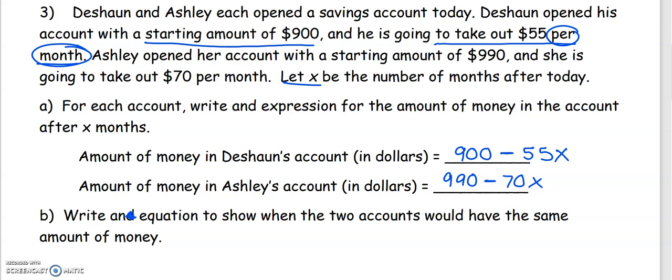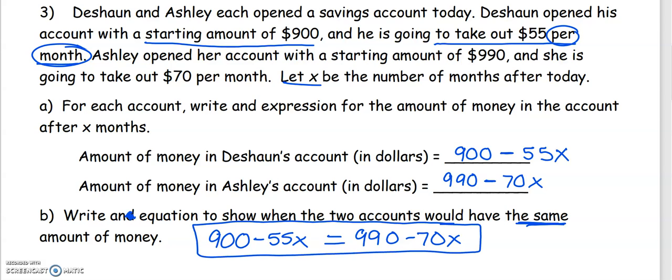Write an equation. If we write an equation that shows the two accounts have the same amount of money, we're saying that the two accounts are equal to each other. For part b, all we have to do is take the two expressions that we already wrote: for Deshaun, 900 minus 55x, and set it equal to the amount in Ashley's account, $990 minus 70x. That's all we have to do is write this equation. We're not asked to solve it.